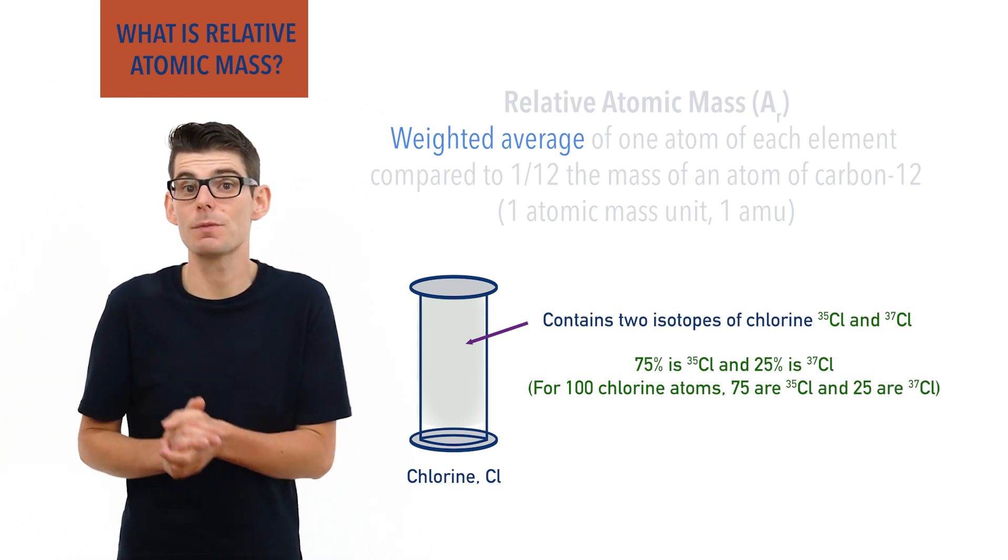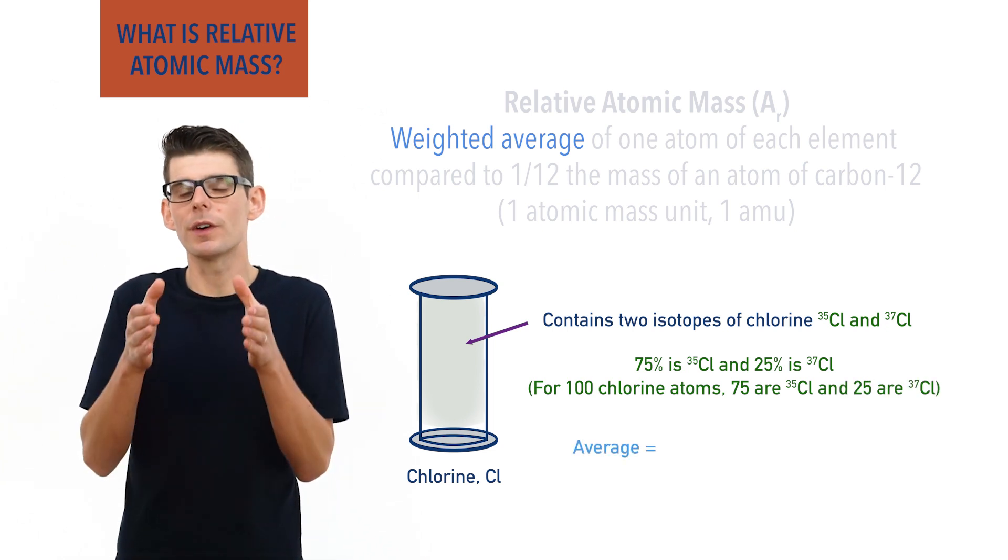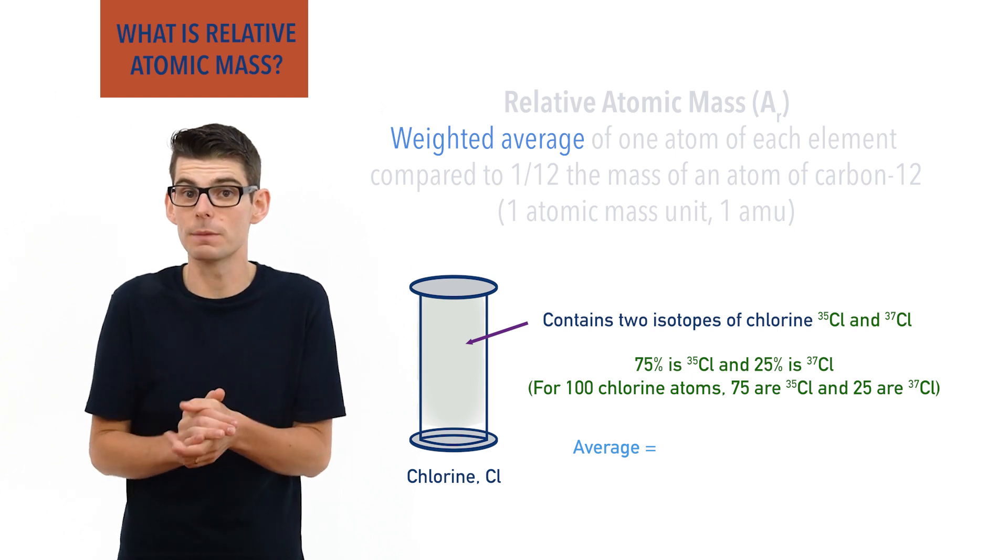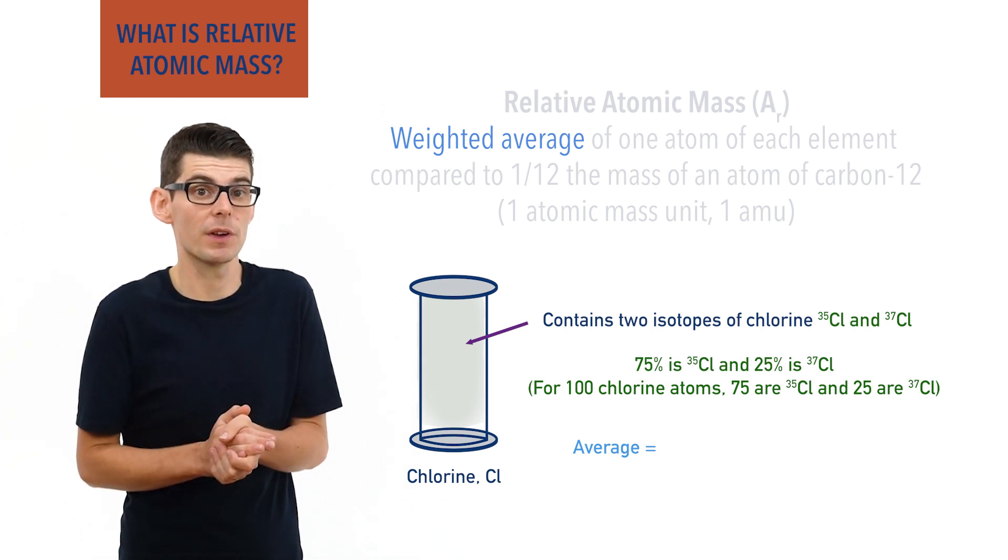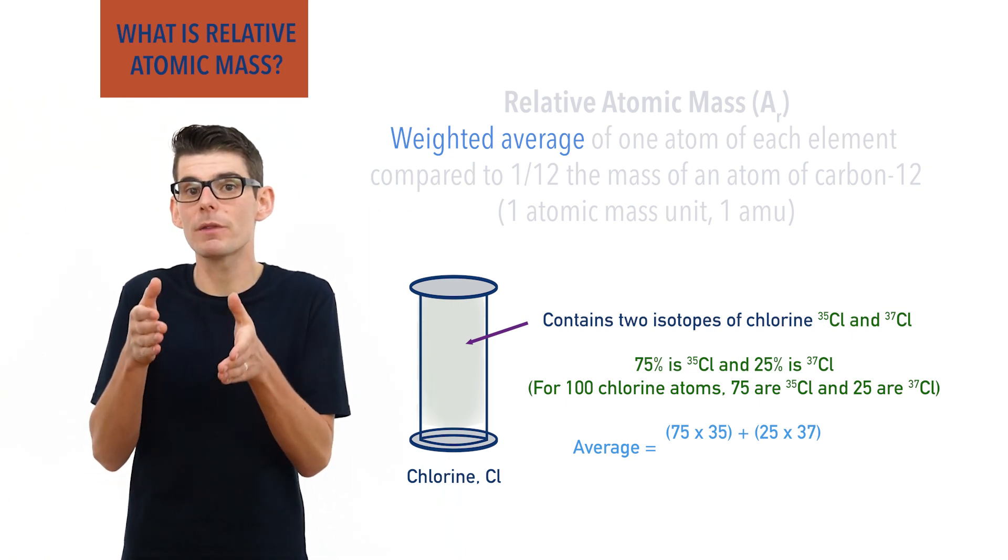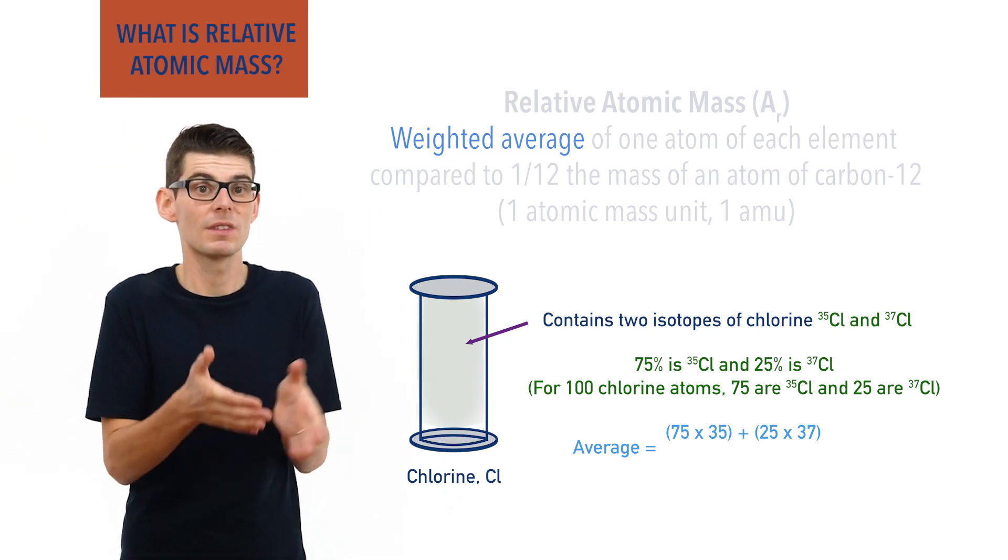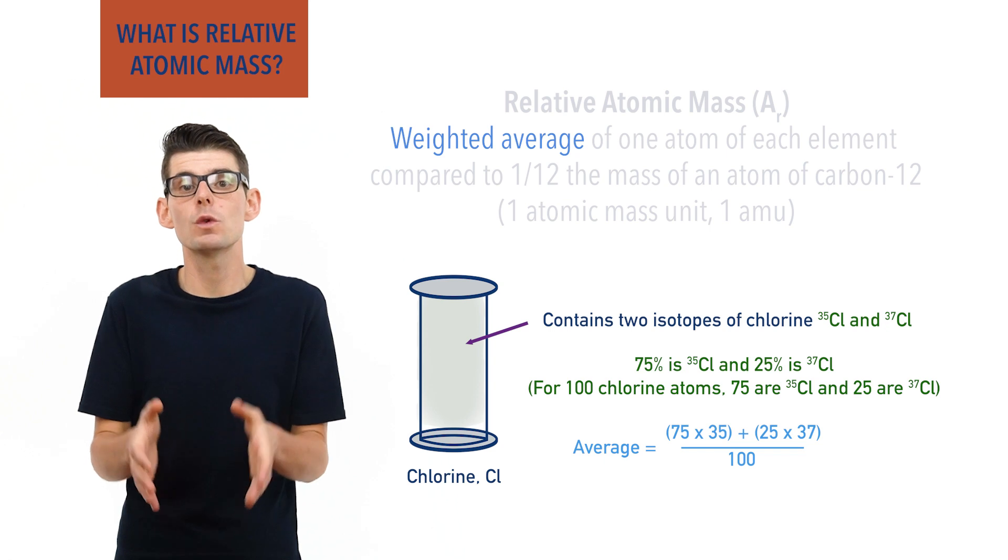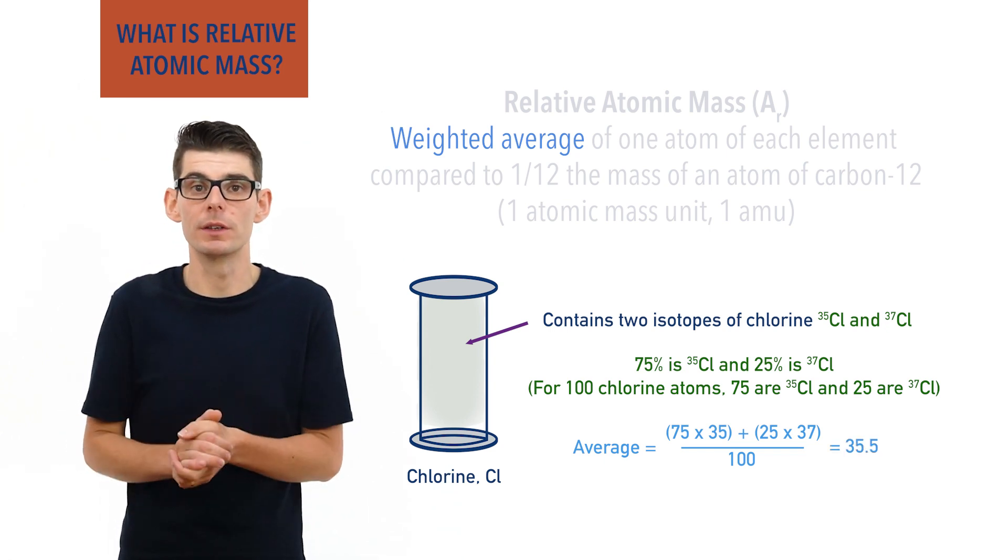To find the average mass of one atom then, you can find the total masses of all the atoms present, 75 times 35 plus 25 times 37, and then divide by the total number of all atoms, 100. This gives you a weighted average of 35.5.